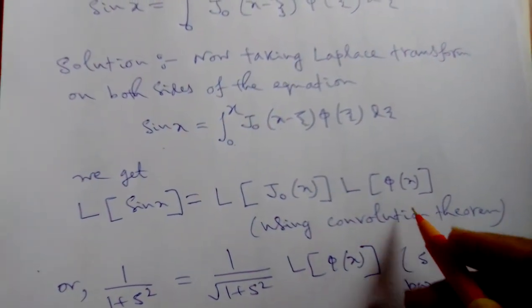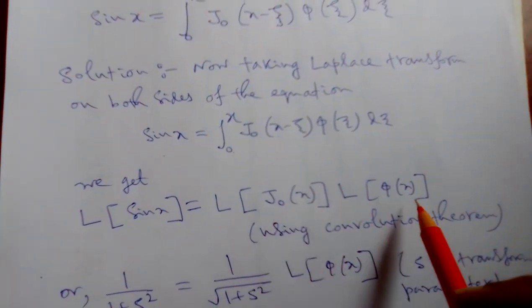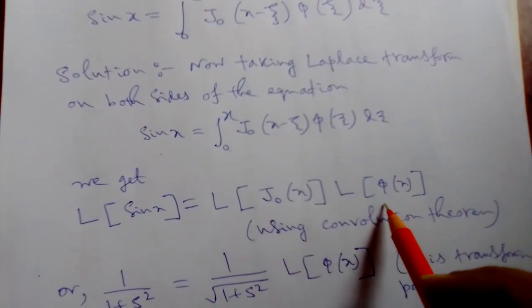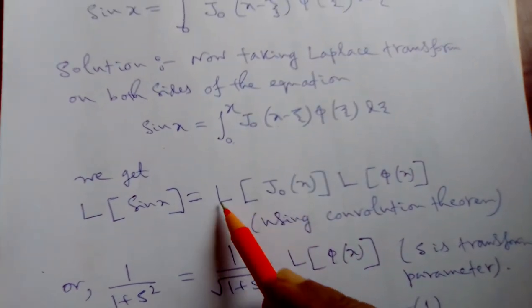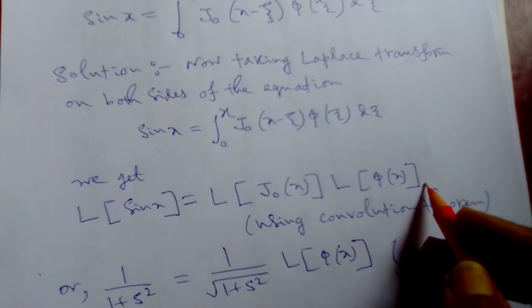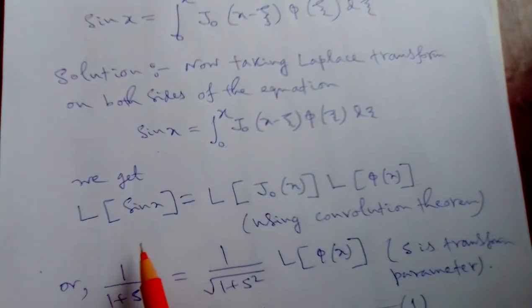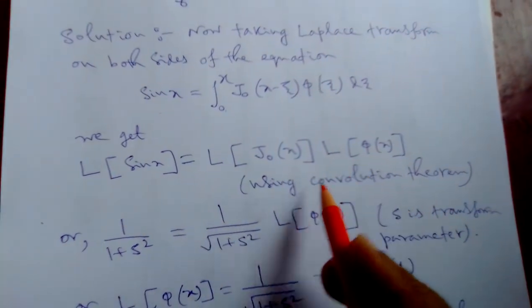We do not discuss this convolution theorem here because this is the earlier part. So, convolution theorem is nothing but this product: L of j0(xi) phi(xi) equals L of phi(xi) times L of j0(x), which equals L of sin x, that is Laplace transform of this.